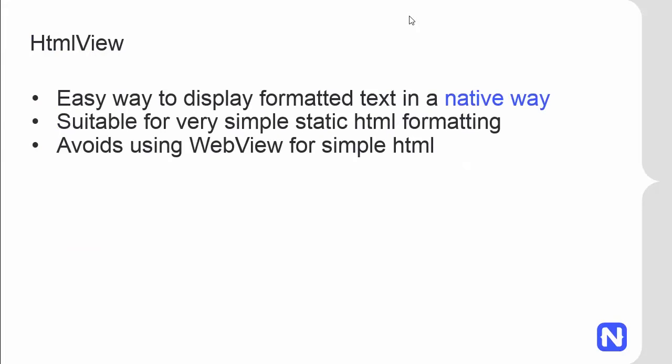The next thing implemented in the 1.2 release is the HTML view component. Many developers were trying to use the web view component to render HTML, which leads to non-optimal native user experience because a web view has significant delay and breaks native performance. With the HTML view component you no longer need a web view for simple static HTML — the HTML is rendered by the native operating system without using web view internally. It supports a limited set of HTML tags, renders only static HTML content, and no JavaScript is allowed.